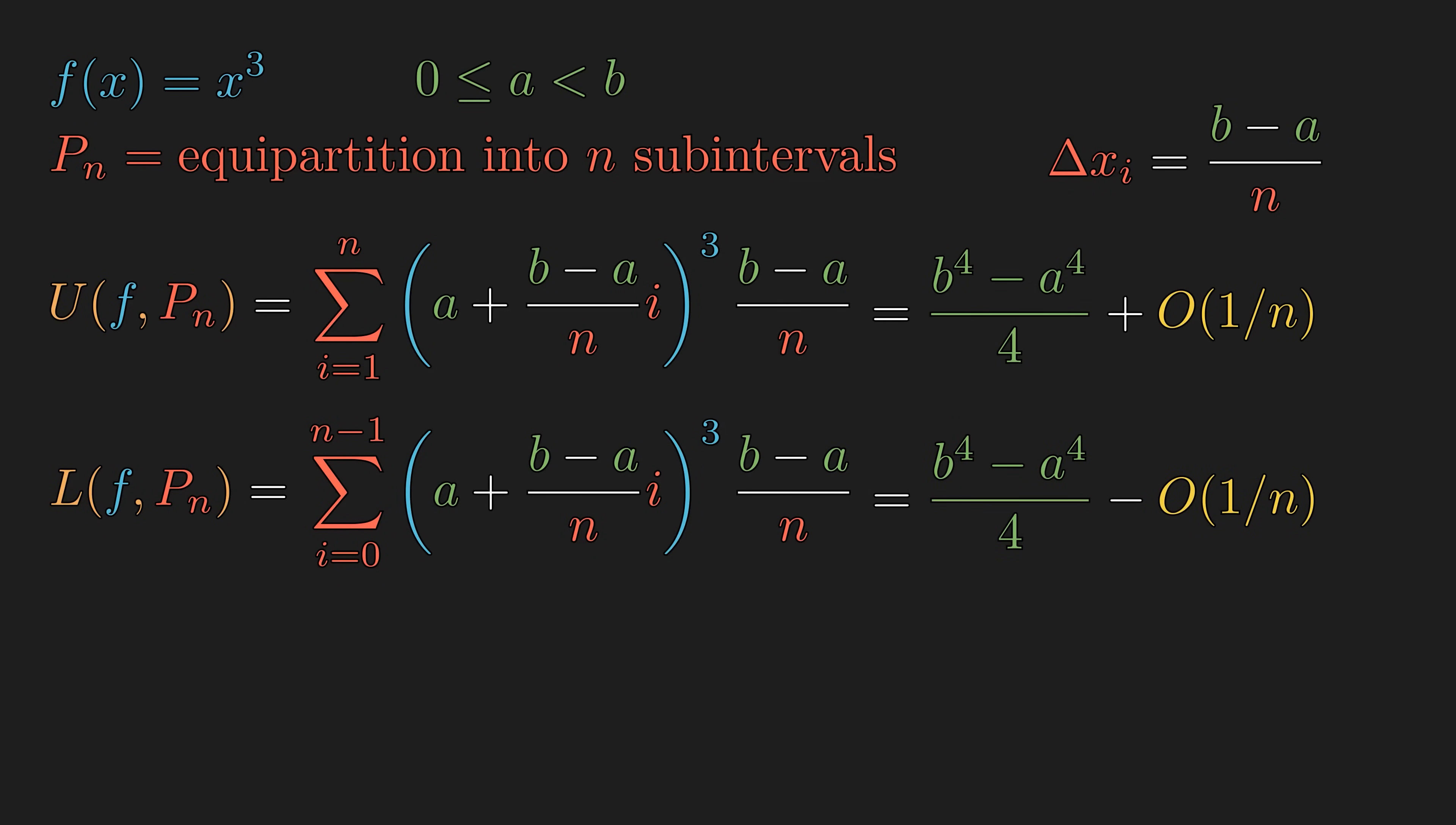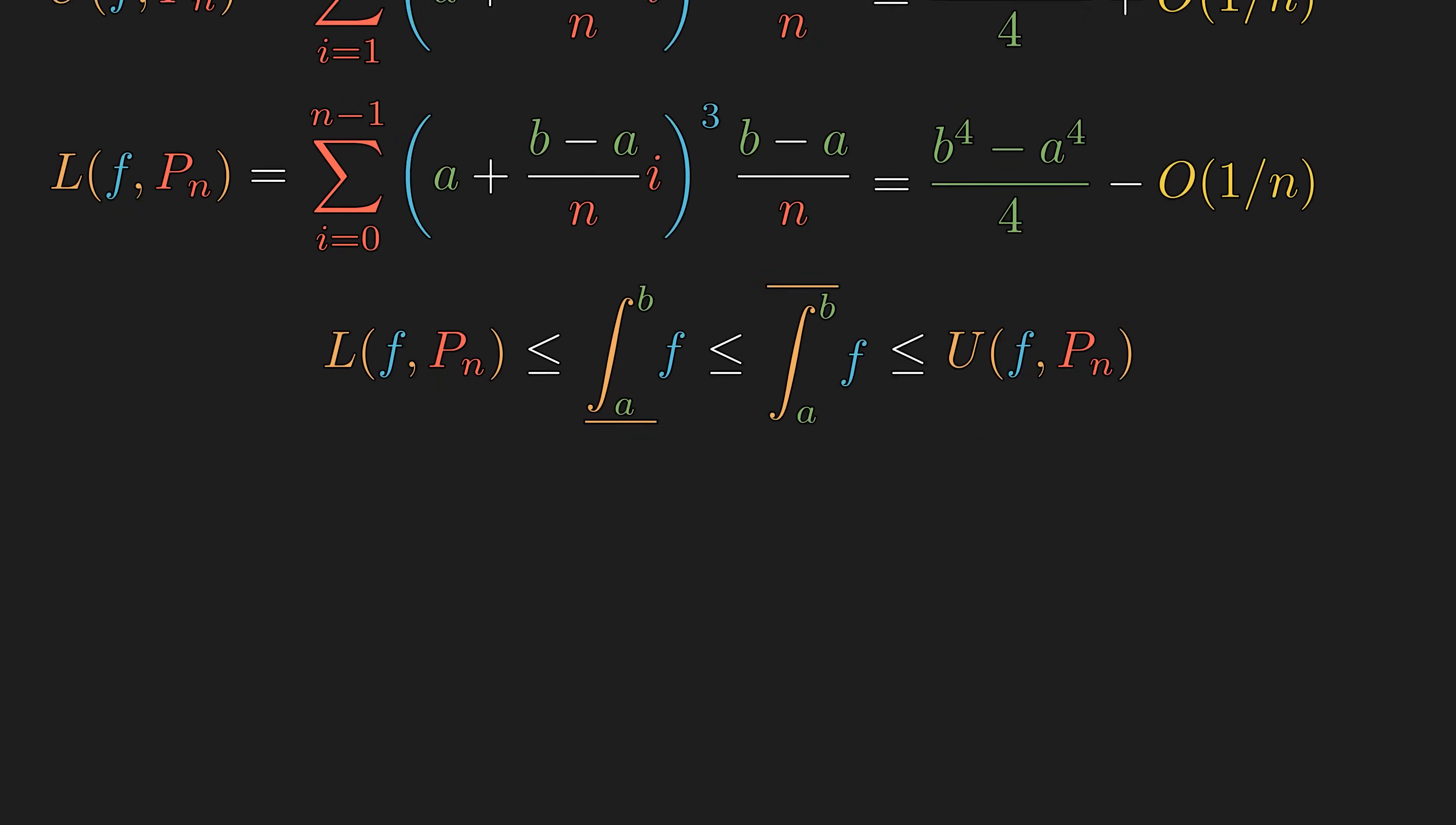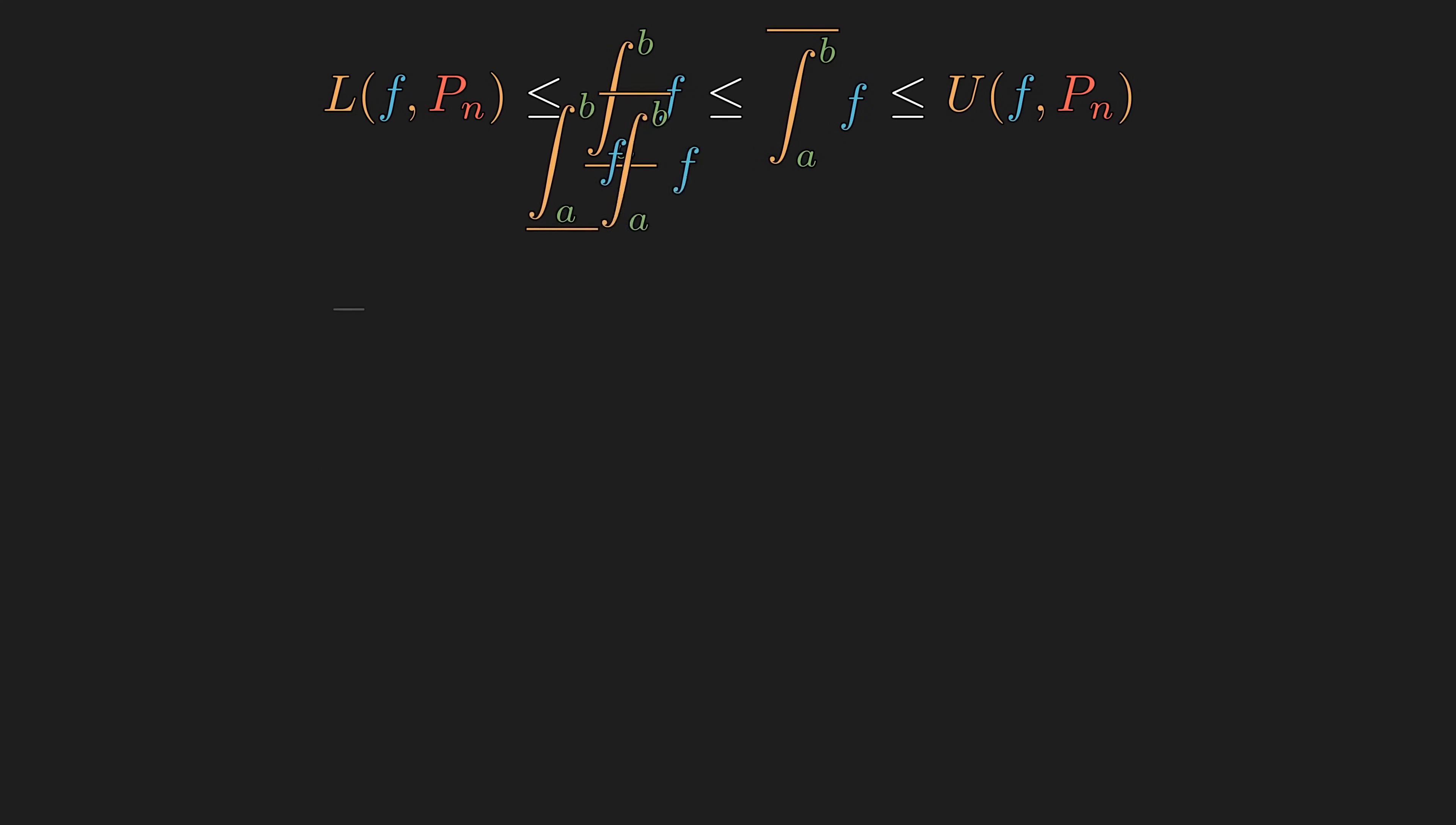Notice how each of these terms are over n or n squared. The summation evaluates to the difference of fourths over 4, plus some additional stuff that decays at the rate of 1 over n. The lower sum should be same as the left sum. The lower sum evaluates to almost the same value. But this time, we took an underestimate, so we have a minus on the additional stuff. The lower integral is the supremum of all underestimates, so it's no more than the infimum of all overestimates, which is less than or equal to any old overestimate, including the upper sums of our equipartition. Similar story for the lower sum.